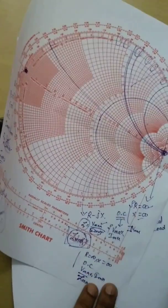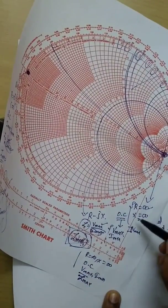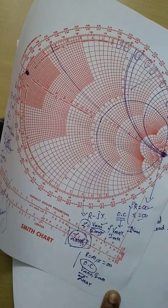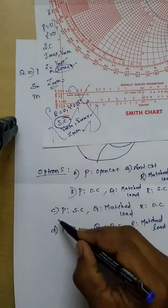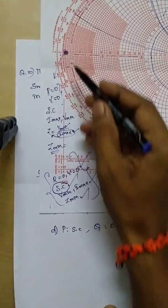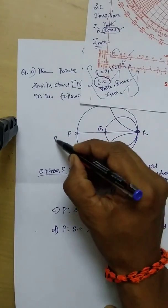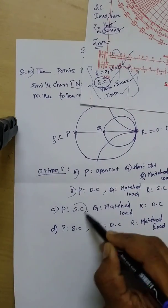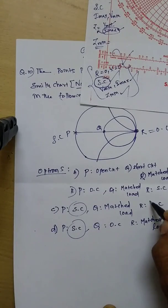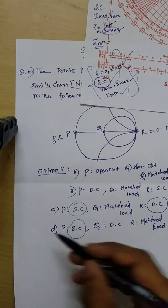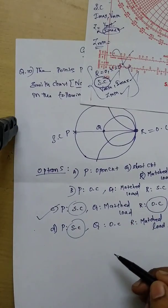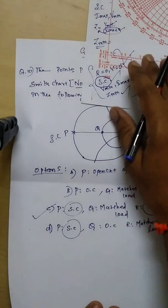Similarly, we derived that R is open circuit and X is open circuit, so this end is the open circuit point. Two points are very clear: the P side is short circuit and R is open circuit. From this alone, we can determine that option C is the right answer for the given question.